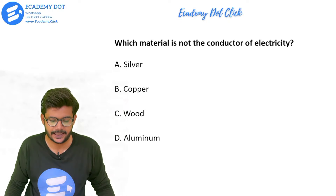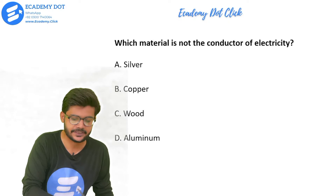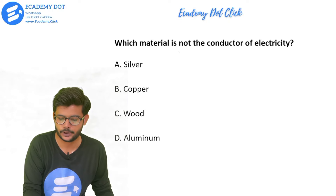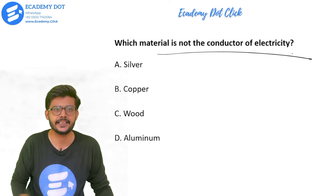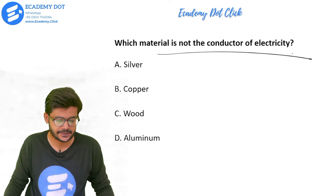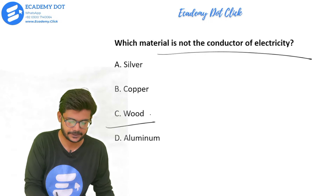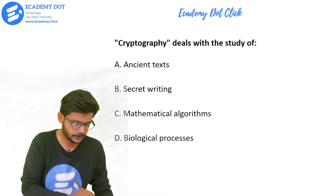Which material is not a conductor of electricity — meaning which is an insulator? Options are silver, copper, wood, or aluminium. The right answer is option C, that is wood.